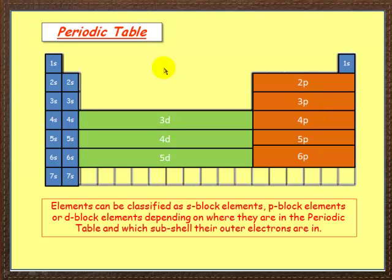Lastly, let's look at the periodic table. Elements can be classified as S-block, which are these here; P-block, these over here; or D-block, these here, depending on where they are in the periodic table and which subshell their outer electrons are in. So these, the subshell here is the 3d. That's the outermost energy level, outermost subshell: 3d, 4d and so on.